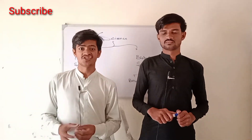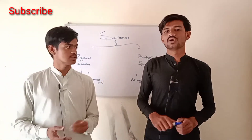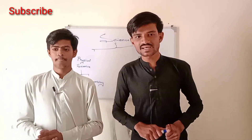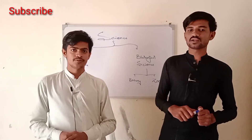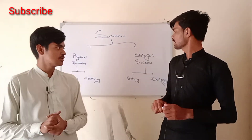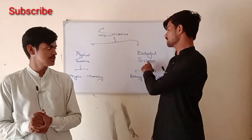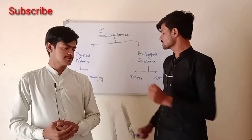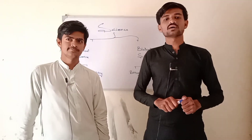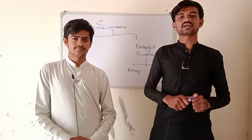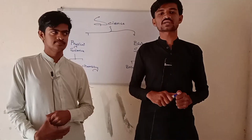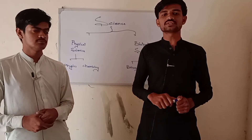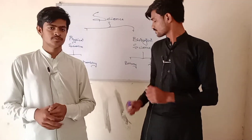Science has two main branches: one is physical science and the second is biological science. In biological science, we study about living things, and biological science is further classified into two branches.